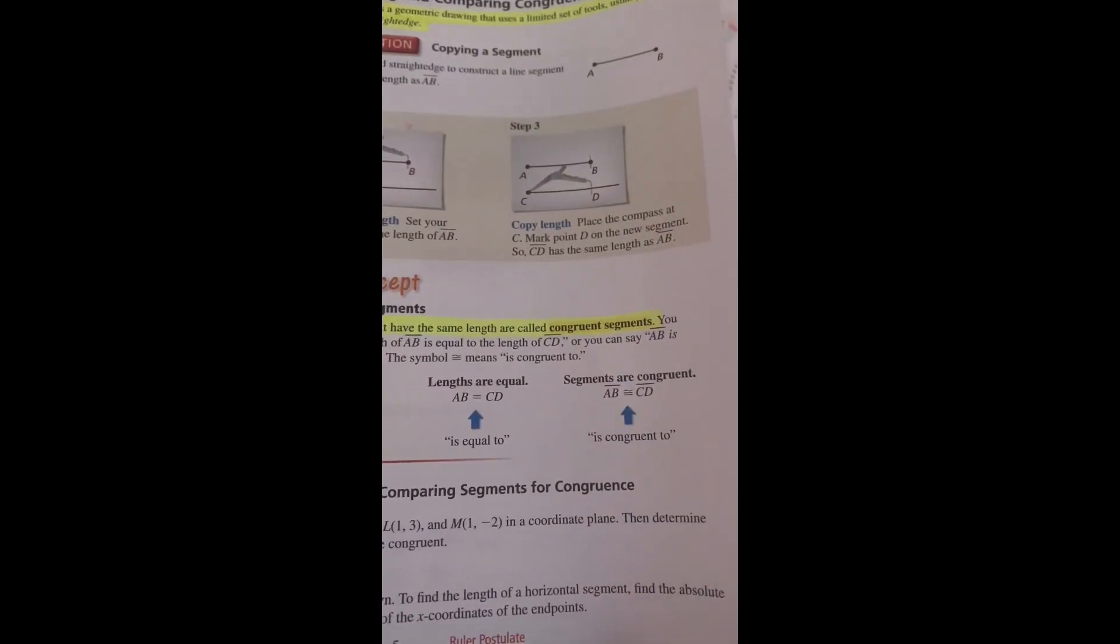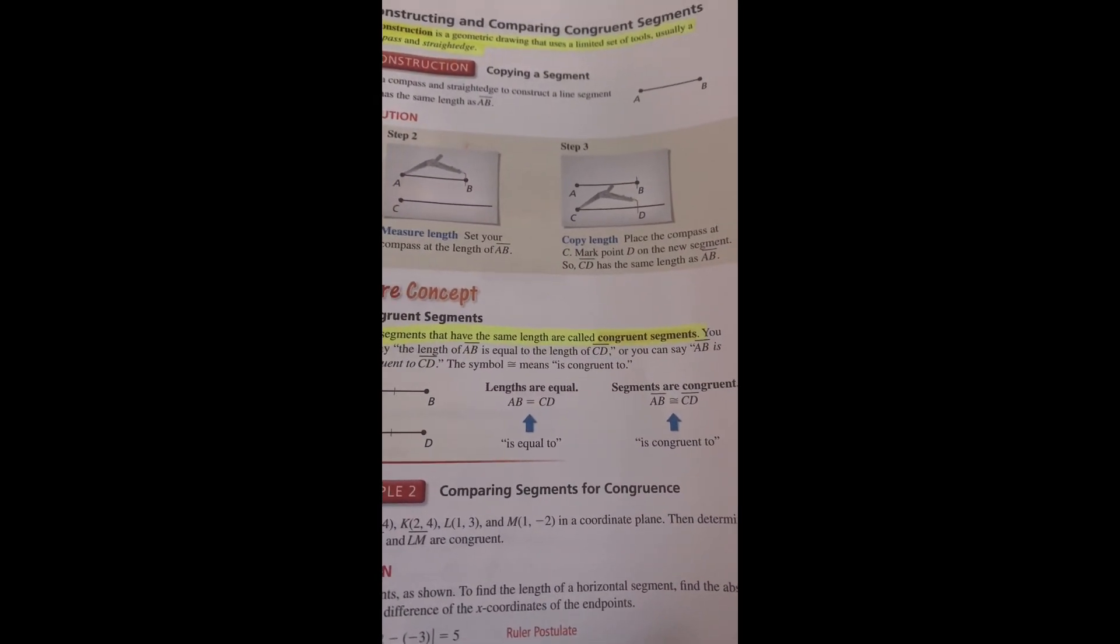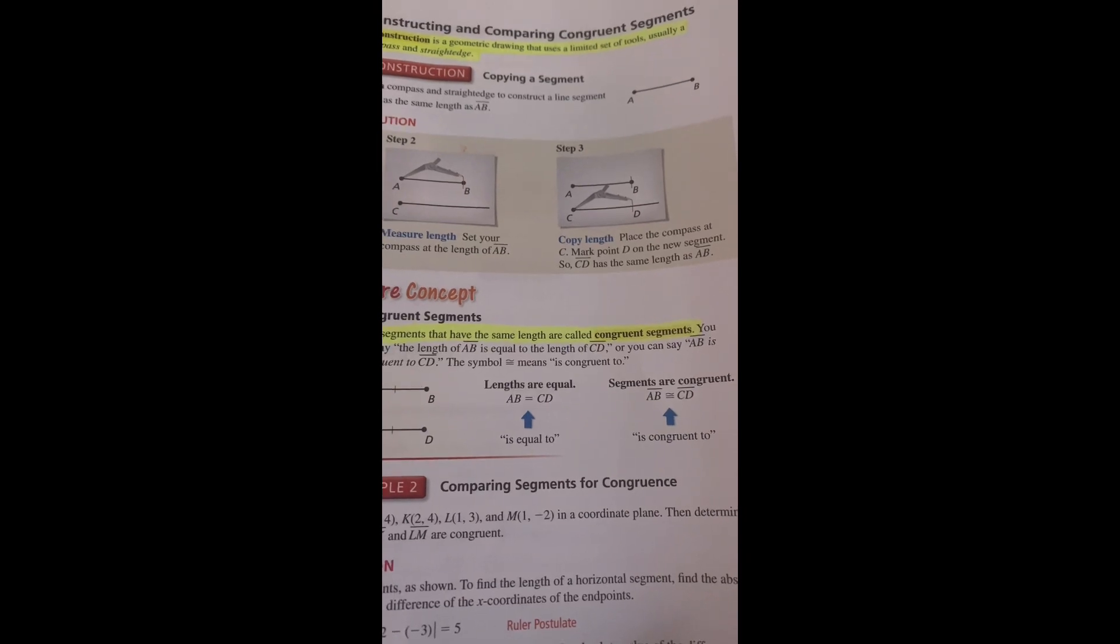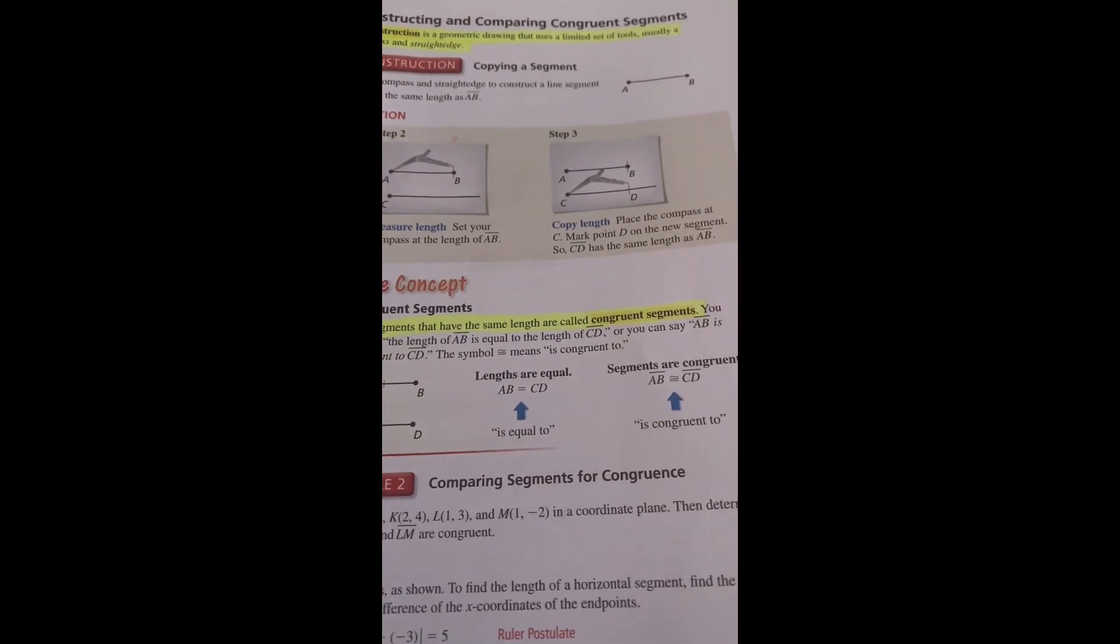Reading: In the diagram, the red tick marks indicate that line segment AB is equal to line segment CD. When there is more than one pair of congruent segments, use multiple tick marks.